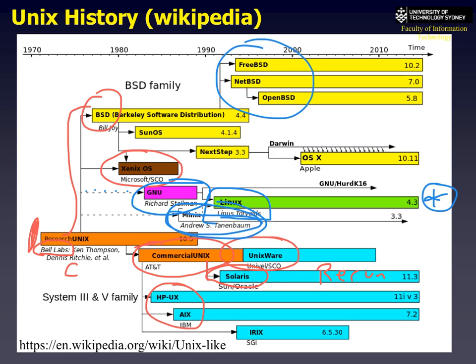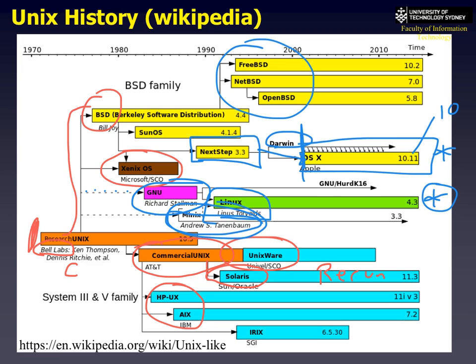Steve Jobs, when he was kicked out of Apple in the 90s, developed a company called NeXTSTEP, which developed the user interfaces we see with OSX. That became Apple OSX when he rejoined Apple—this is Steve Jobs' revenge. He formed the new operating system OSX, which stood for Operating System 10. Darwin is the basic kernel of the Mac and it's open source—you can download and compile it yourself. OSX is divided into the iPhone version and the Mac version.